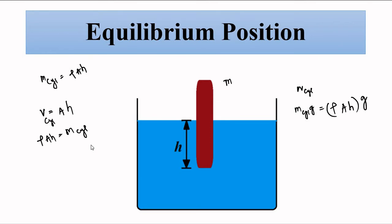According to the principle of flotation, the weight of the submerged object equals the weight of the liquid displaced by that submerged portion. The submerged portion has cross-sectional area A and immersed length h, giving volume A times h. Multiplying by the liquid density rho gives the mass of displaced liquid as rho A h, and the weight is rho A h times g — which equals the weight of the cylinder.